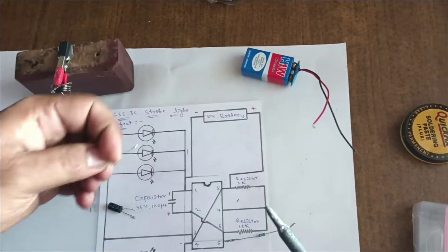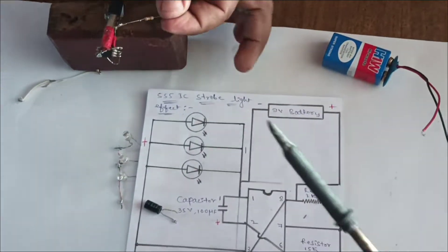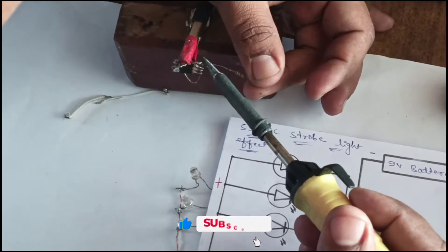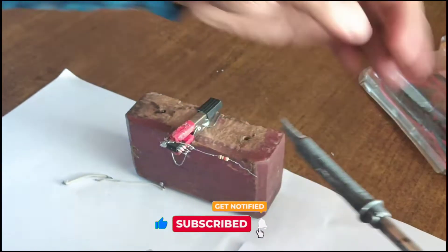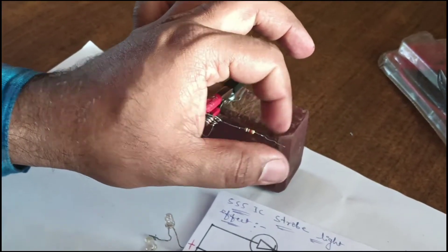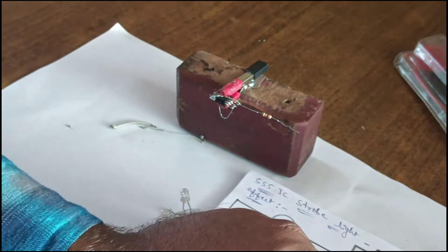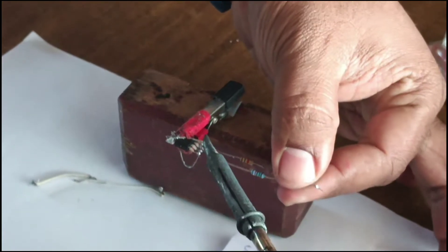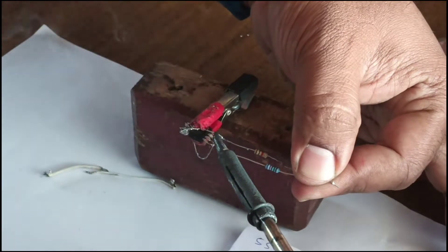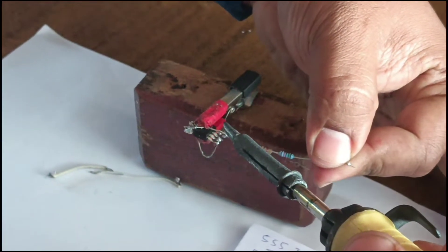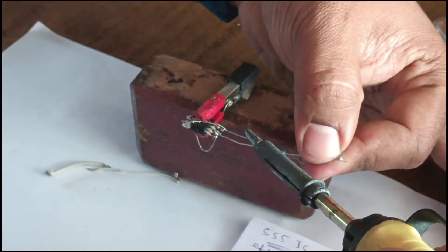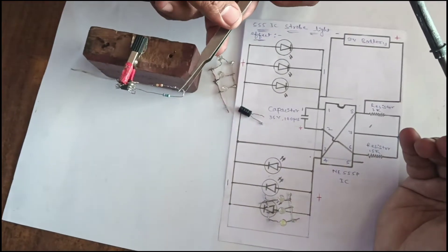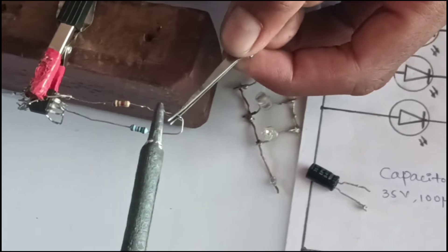Connect the 1 kilo-ohm resistor to pin number 8. This is the 15 kilo-ohm resistor—connect to pin number 6. Actually, 10 kilo-ohm resistor to pin number 6. Make the 10 kilo-ohm resistor connect to the 1 kilo-ohm resistor.